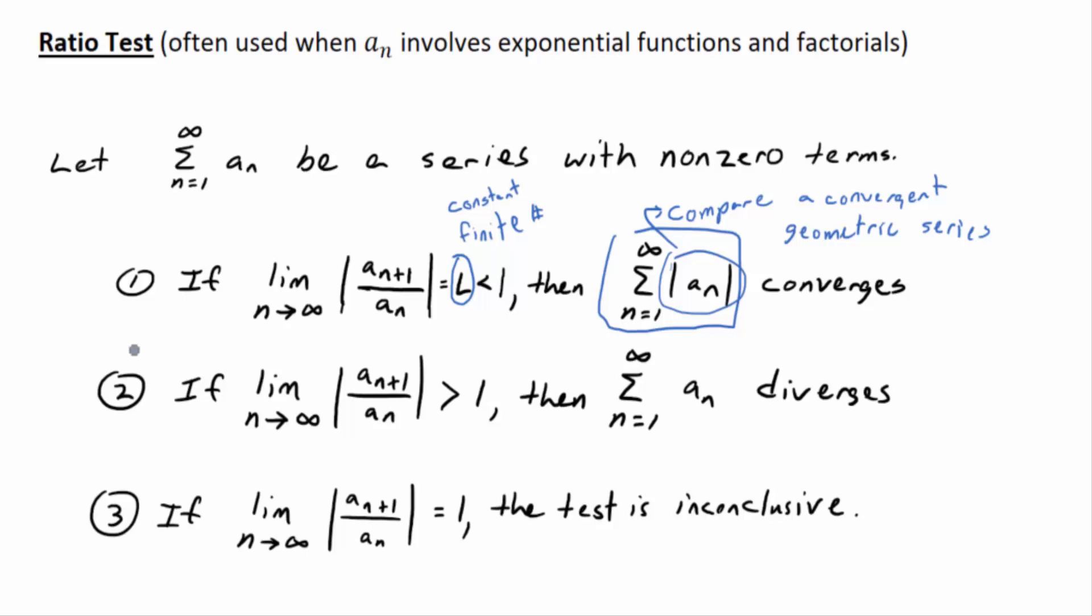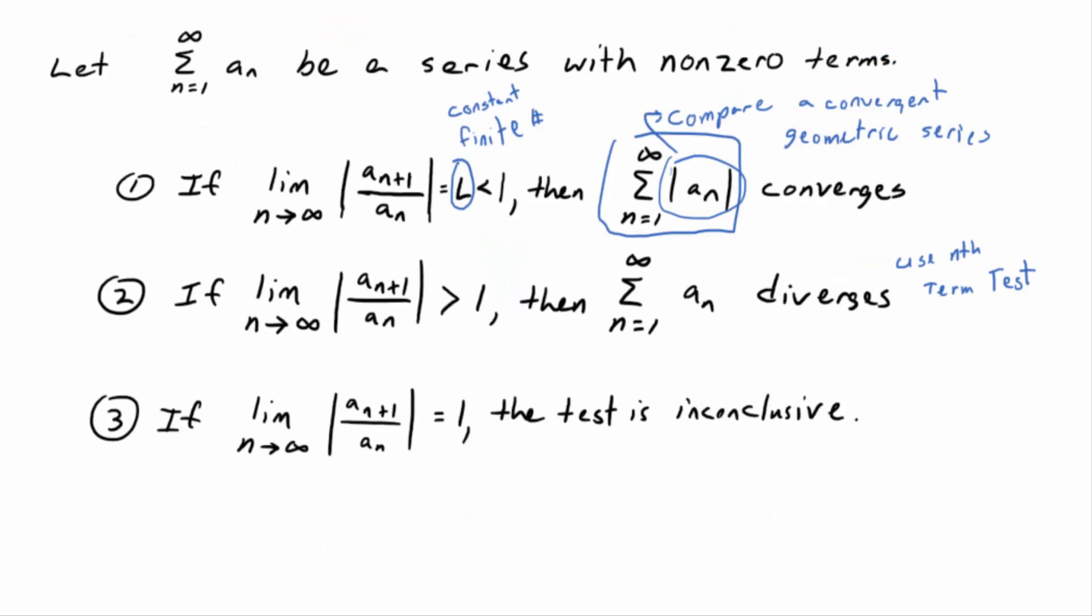So, that's how it's done anyway. That's for number one. For number two, you can show it diverges using the nth term test for divergence. And then, for number three,